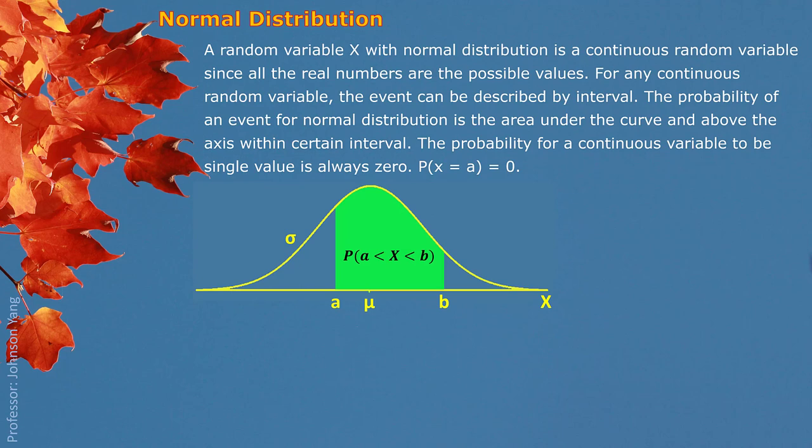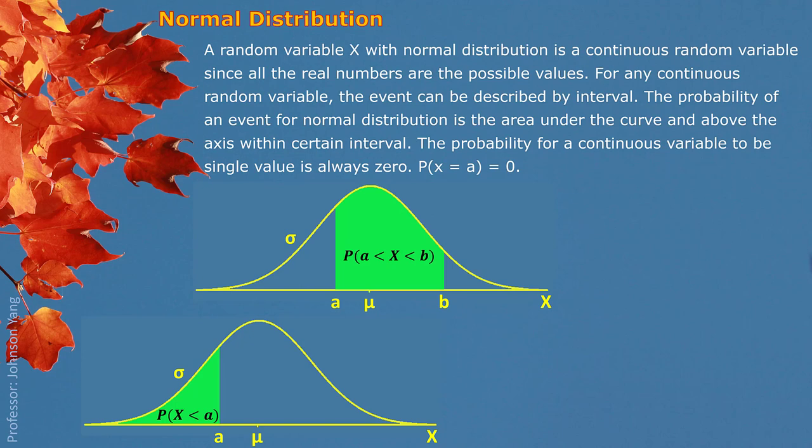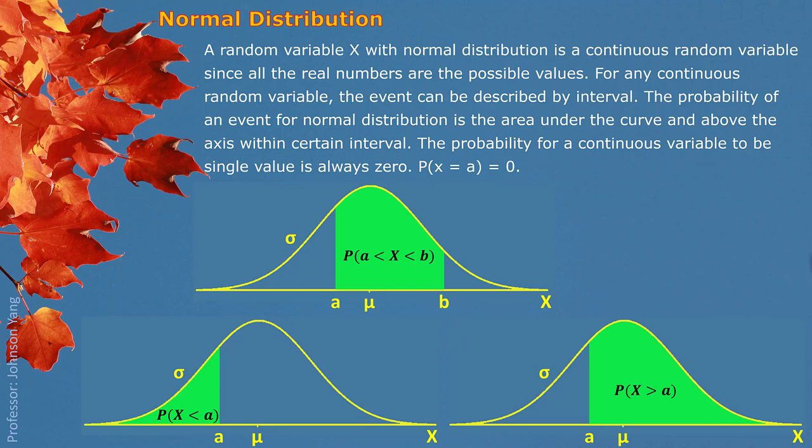For any continuous random variable, the probability of taking a single value is zero. Here another example: how much chance the random variable is smaller than A — the chance is described by the green shaded area, which is the left side tail. If we look at how much chance the random variable is greater than A, then it's the right side tail, and the green area represents that probability.